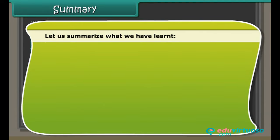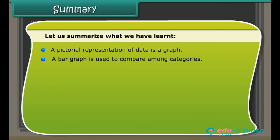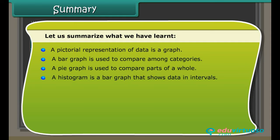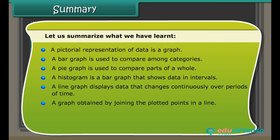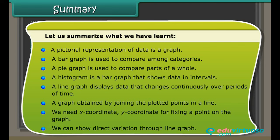Summary: Let us summarize what we have learned. A pictorial representation of data is a graph. A bar graph is used to compare among categories. A pie graph is used to compare parts of a whole. A histogram is a bar graph that shows data in intervals. A line graph displays data that changes continuously over periods of time. A graph obtained by joining the plotted points in a line. We need X coordinate, Y coordinate for fixing a point on the graph. We can show direct variation through line graph.